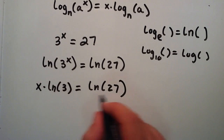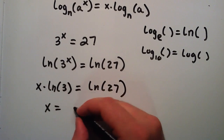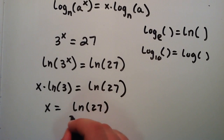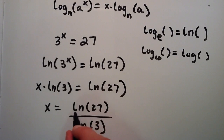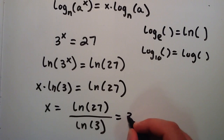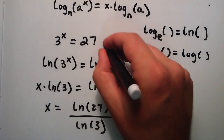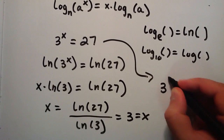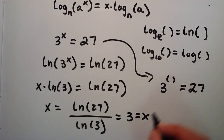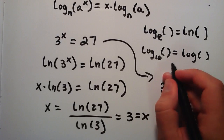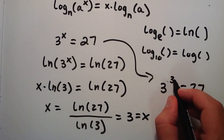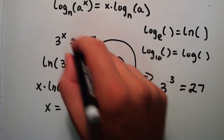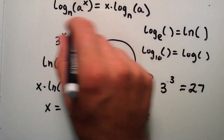We divide each side by the natural log of 3, and that gives us x is equal to the natural log of 27 divided by the natural log of 3. If we plug that into our calculator carefully, we find that the answer is 3. So plugging it back into our expression, 3 to the x equals 27, and we found that x equals 3. So 3 multiplied by itself 3 times equals 27, and we were able to solve that using this property.